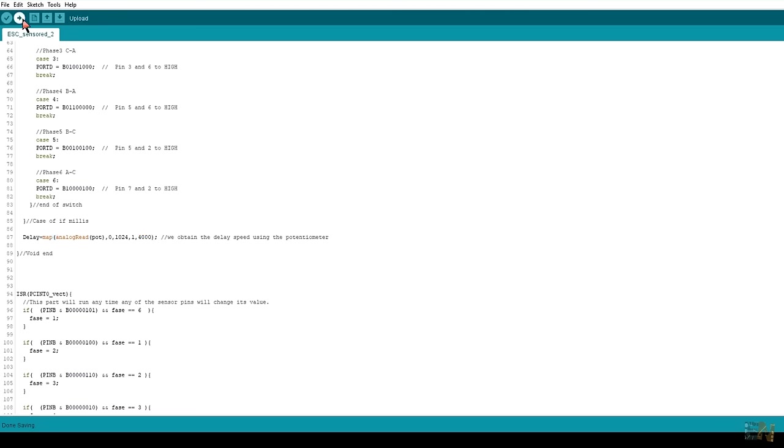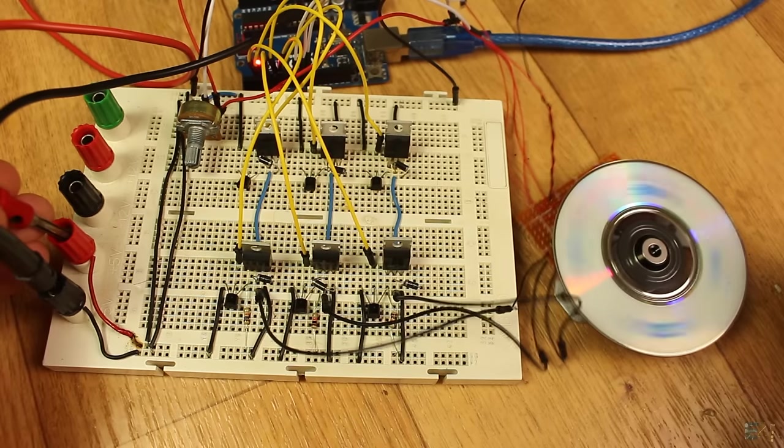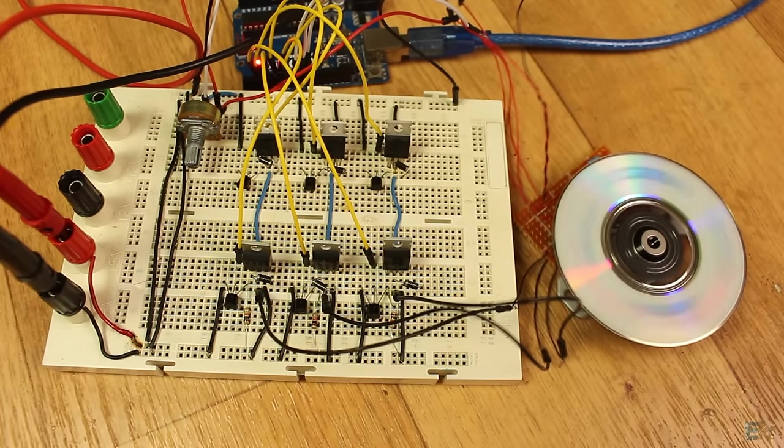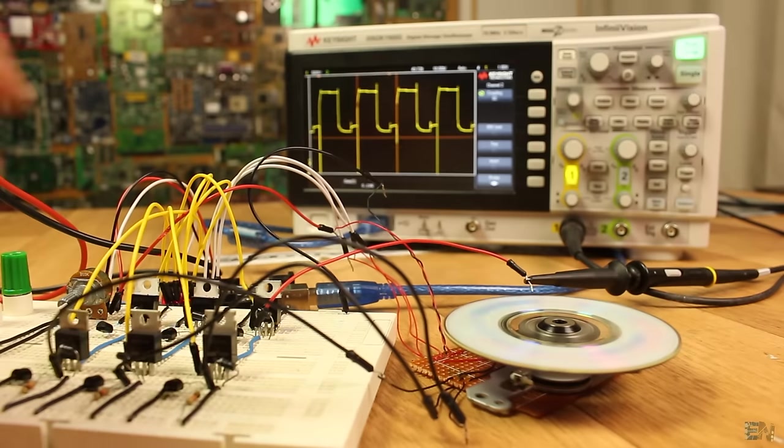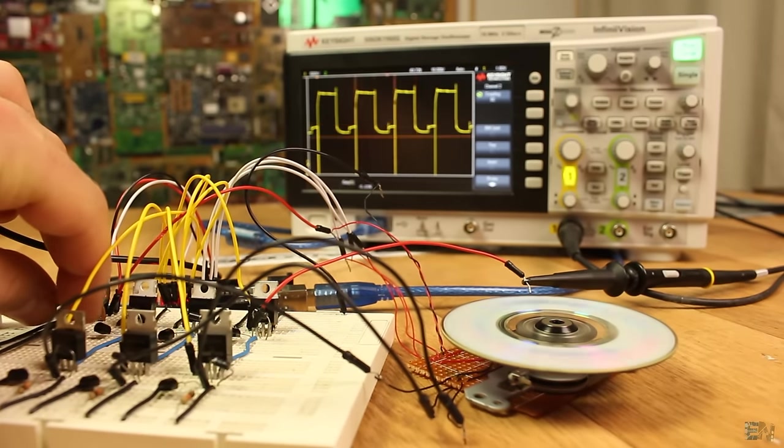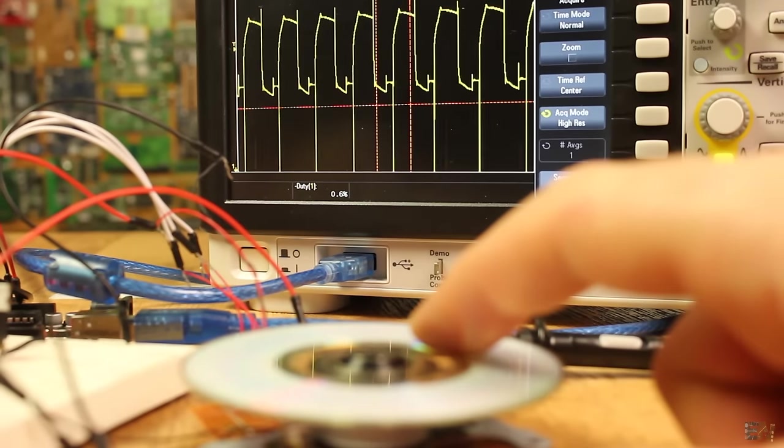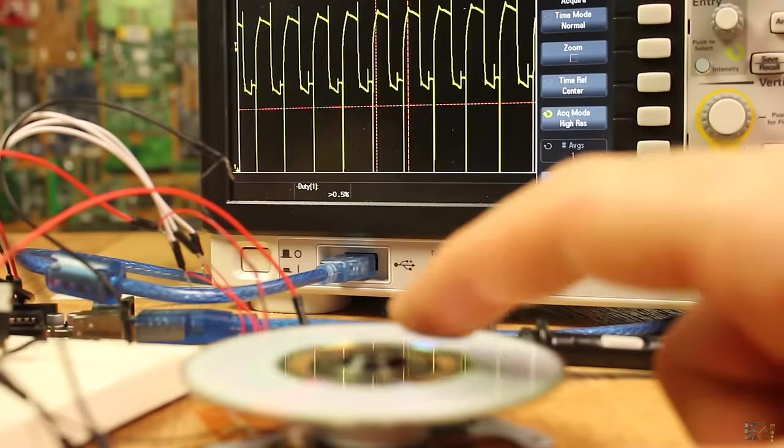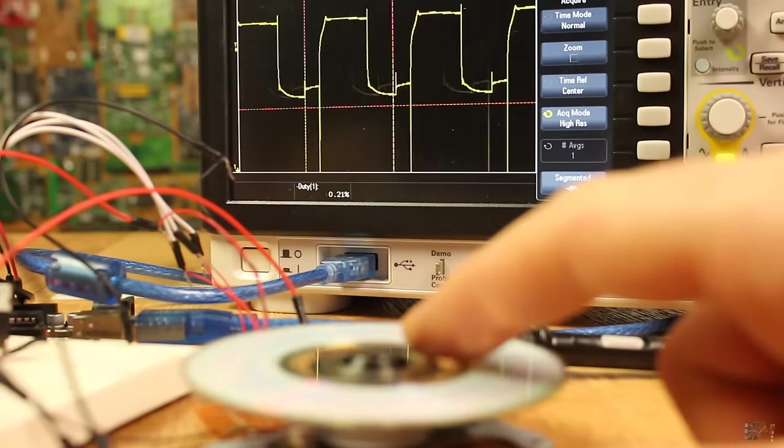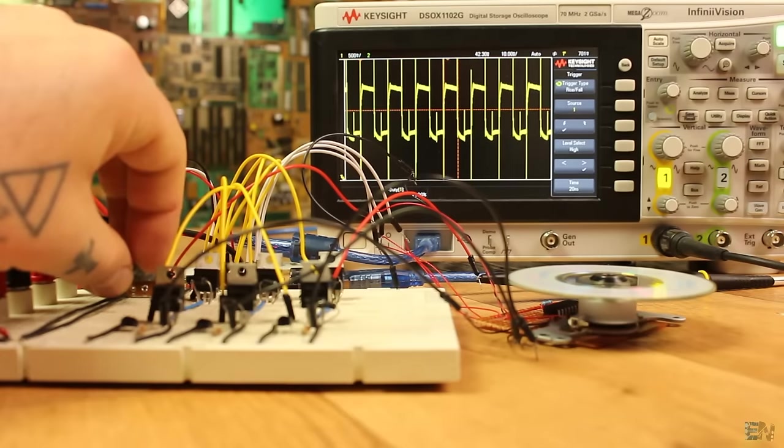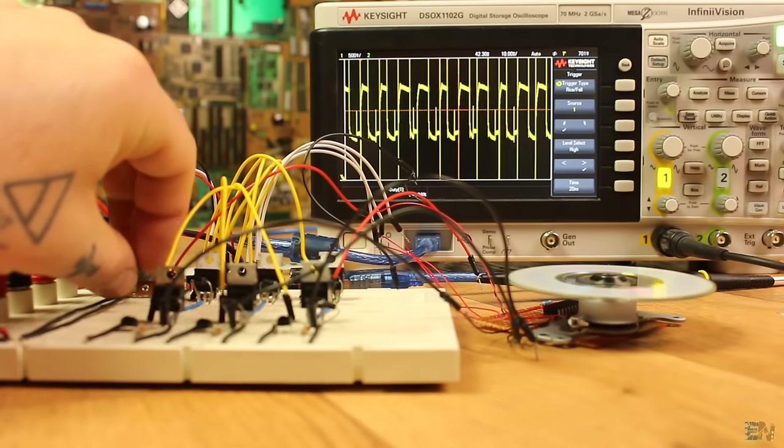I upload the code and make sure that all the connections are made. I supply the circuit and as you can see, the brushless motor is now spinning. I connect the probe of my oscilloscope to one of the MOSFET gates. As you can see we have a square wave signal. But if I try to slow down the motor with my hand, the width of the pulse will automatically adjust in order to match the speed of the motor and that's due to the hall sensor feedback. Also using the potentiometer I can set the speed of the motor by changing the delay between each step of the sequence.